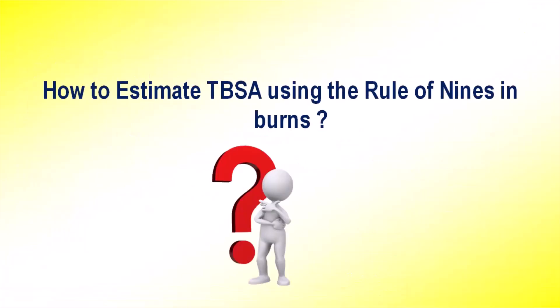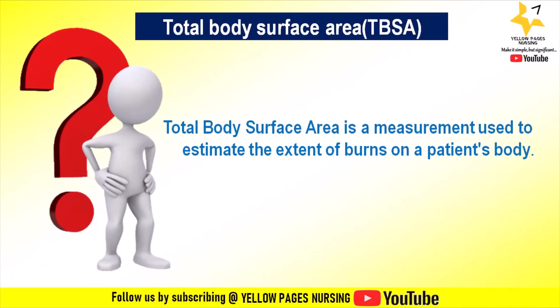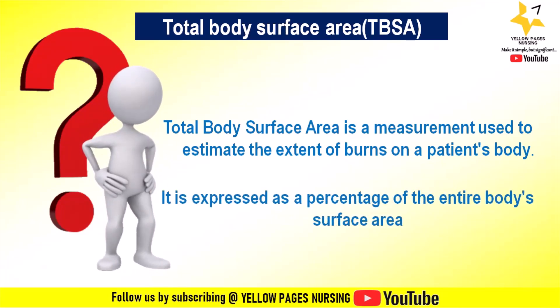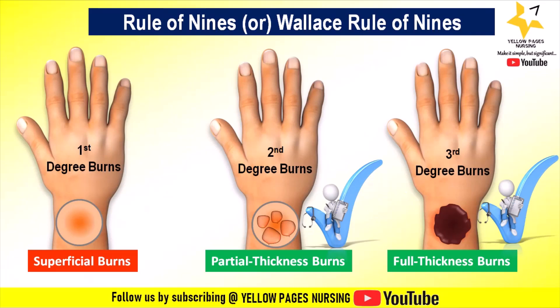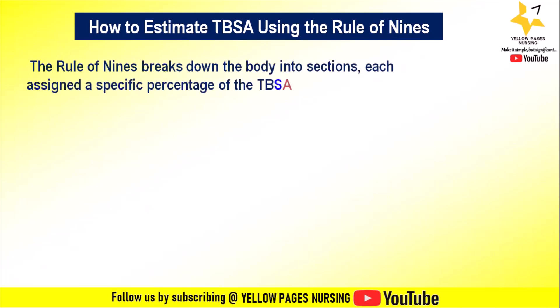Next is how to estimate total body surface area using the rule of nines. Total body surface area is a measurement used to estimate the extent of burns on a patient's body, expressed as a percentage of the entire body's surface area. The rule of nines is primarily used to assess partial thickness (second degree) and full thickness (third degree) burns, as these are significant enough to require medical intervention and fluid resuscitation, unlike first degree burns. The rule of nines breaks down the body into sections, each assigned a specific percentage of total body surface area.